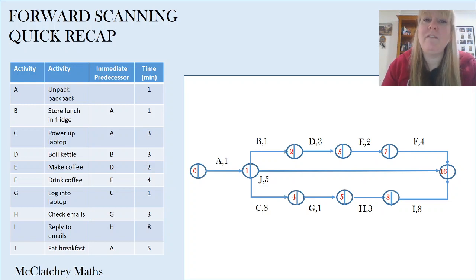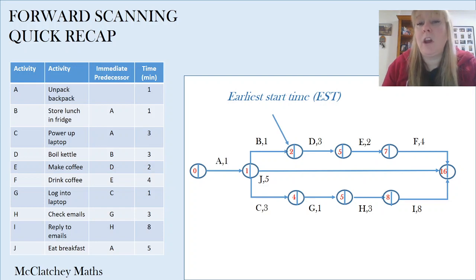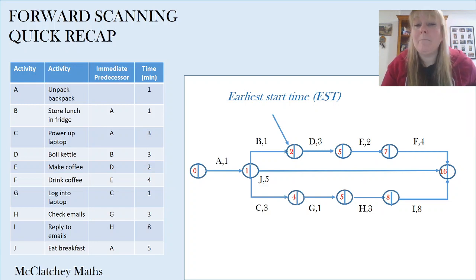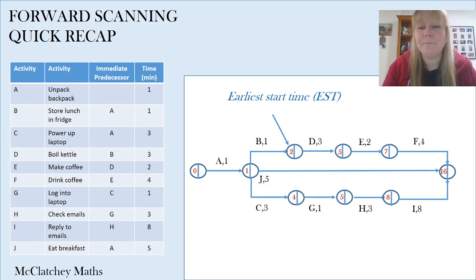If you remember, when we forward scanned through the network we put the earliest start time at the beginning — on the left-hand side of each vertex. So the earliest that I could start activity D, which is boiling the kettle, would be at the two-minute mark, because I have two predecessors — unpacking my backpack and storing my lunch in the fridge — which takes two minutes. So that's where we get the two from: one plus one.